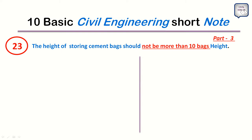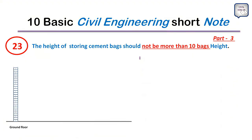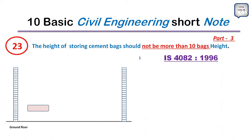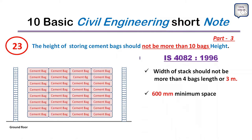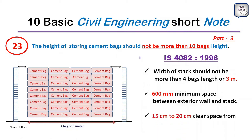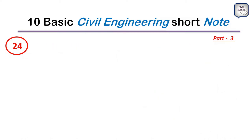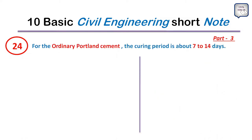Point 23: The height of stacking cement bags should not be more than 10 bags high, as greater height can cause lumps to form inside the bags. According to IS 4082:1996, the width of the stack should not be more than 4 bags' length or 3 meters, with a minimum 600mm space between the exterior wall and the stack.